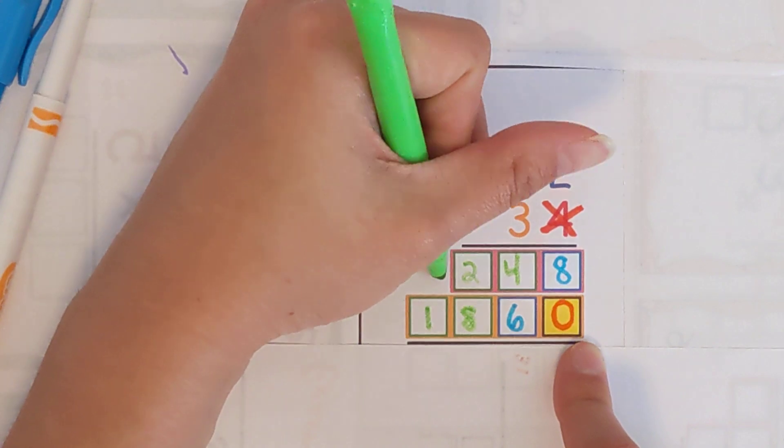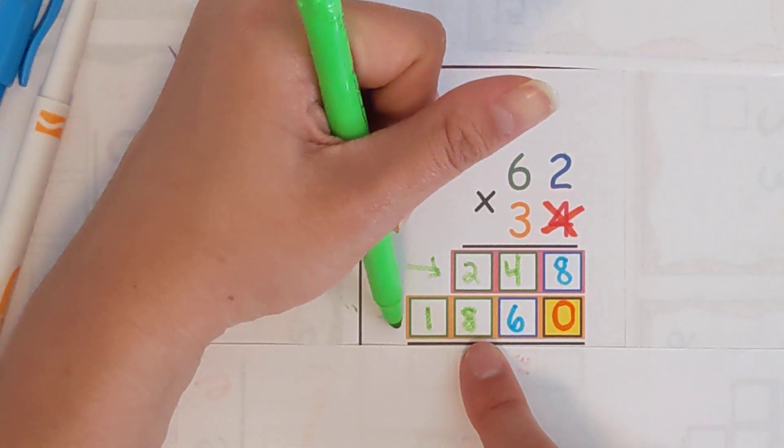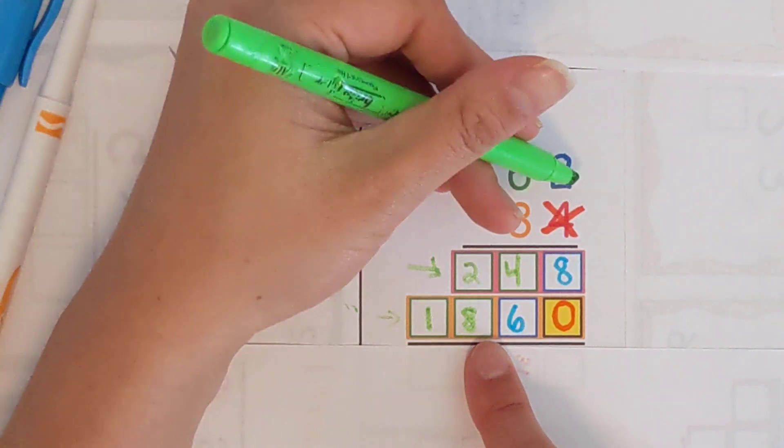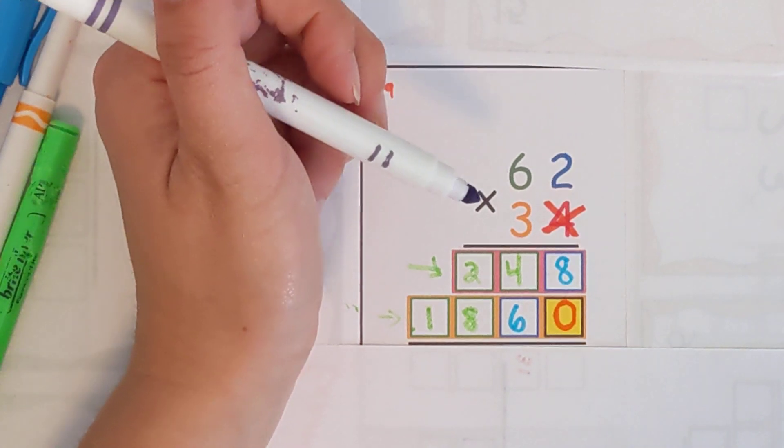Just to recap what we did on this top row we did 62 times 4. On this bottom row we did 62 times 30. To get 62 times 34 we're going to add all of them together and then you'll be done.